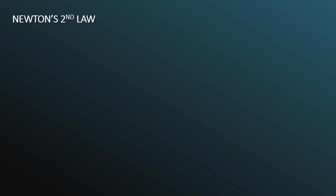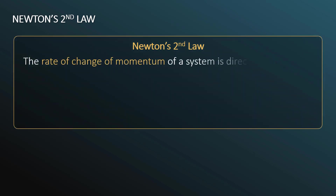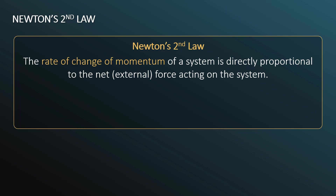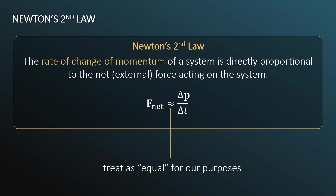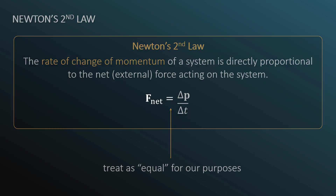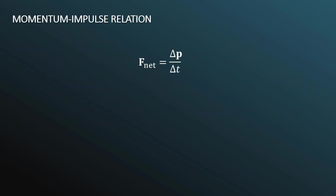Let's return for a moment to Newton's second law. Now let's define Newton's second law in terms of momentum. It says that the rate of change of momentum of a system is directly proportional to the net external force acting on the system. Mathematically, we write this as the net force equals the change in momentum over the change in time — delta P over delta T. For the purposes of our course, we will treat this approximately equal sign as equal to.